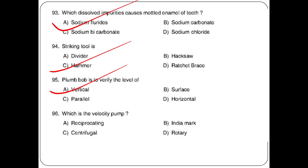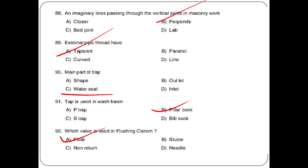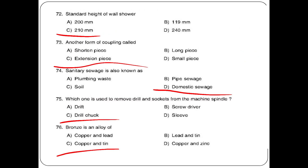Which is the velocity pump? Options: reciprocating, India mark, centrifugal, rotary. The answer is centrifugal. Horizontal pipeline and water supply line have a distance of 3 meters. Single cut file teeth angle is 60 degrees. Metal used in soldering is copper.